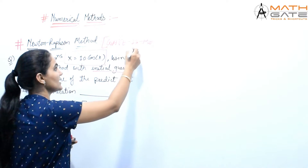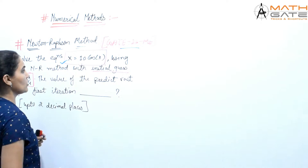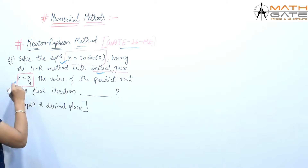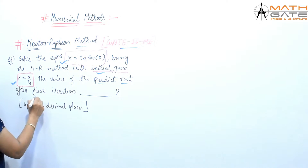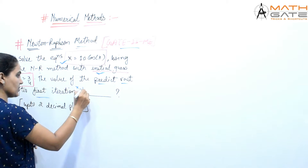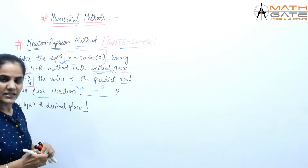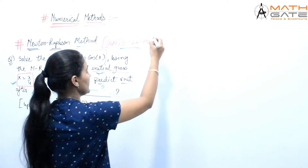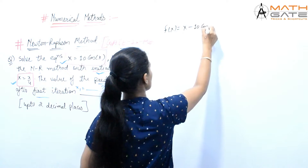Let's discuss the next question, which has been asked in GATE 2016 Mechanical branch. The question is: solve the equation x = 10 cos x using Newton-Raphson method with initial guess x0 = π/4. Find the value of the predicted root after the first iteration, i.e., find x1 up to two decimal places. The function can be written as f(x) = x minus 10 cos x.